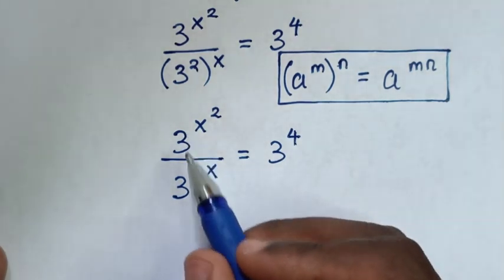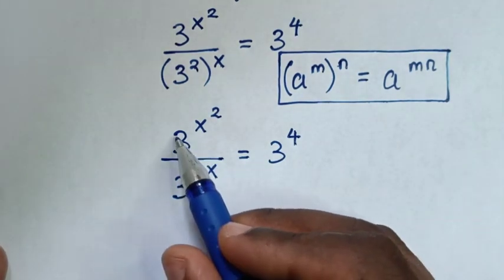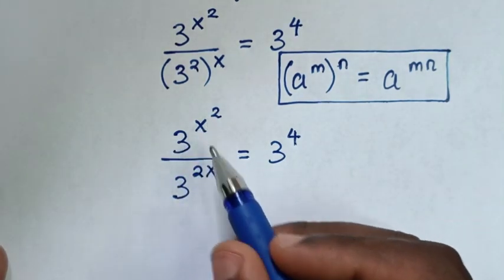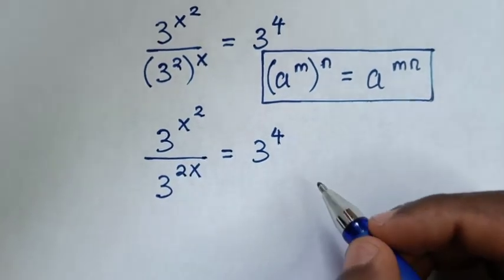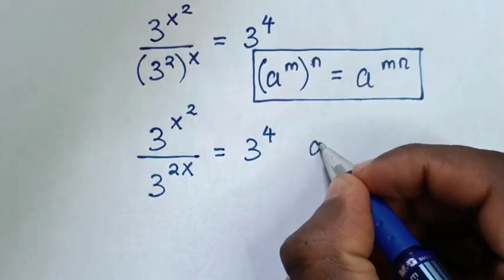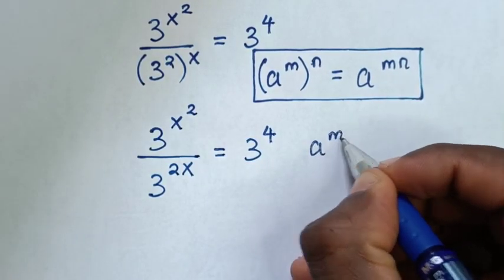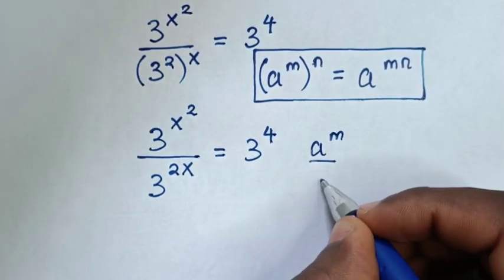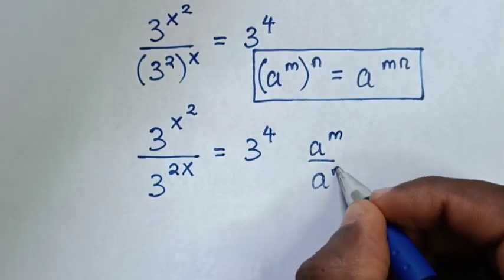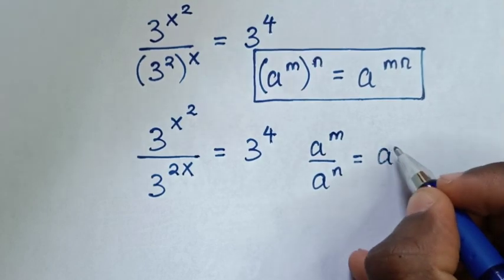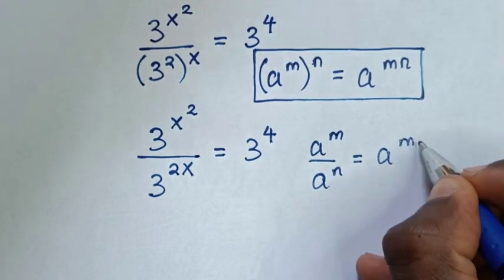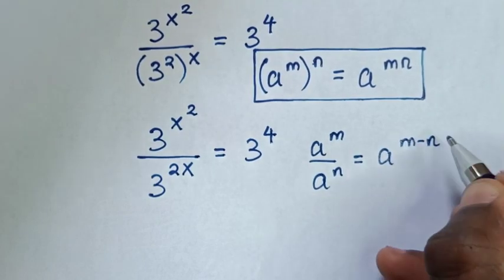Now from this division of exponents with the same base but different powers, we'll apply the exponential rule that a power of m over a power of n is equal to a power of m minus n.